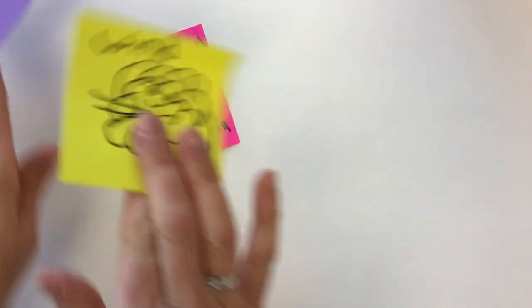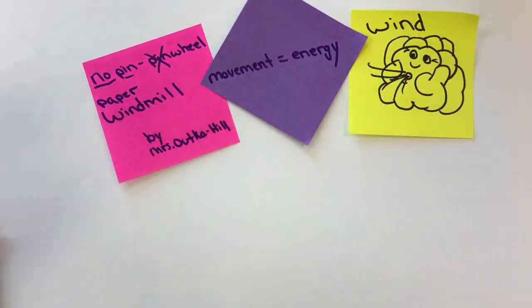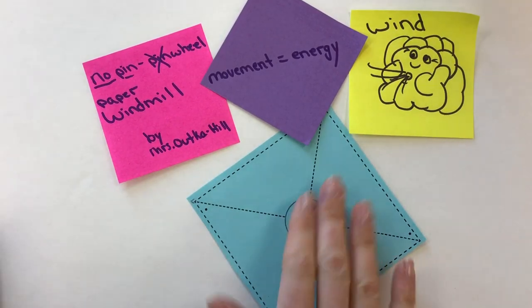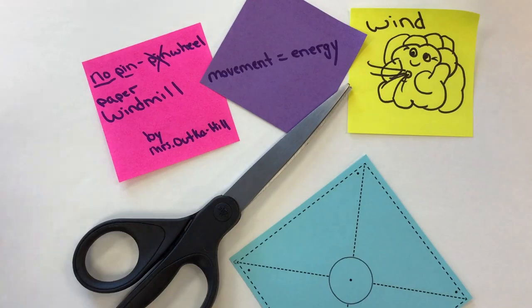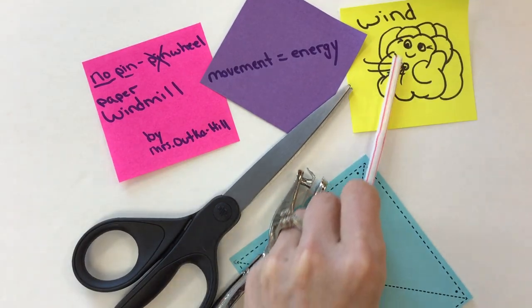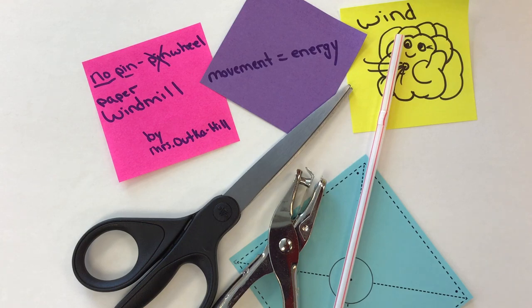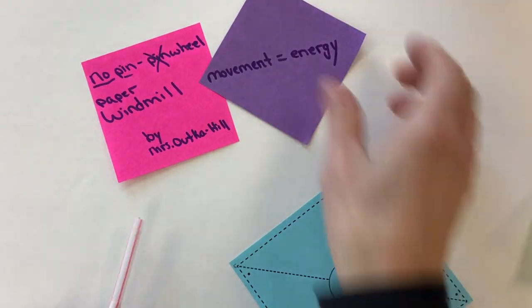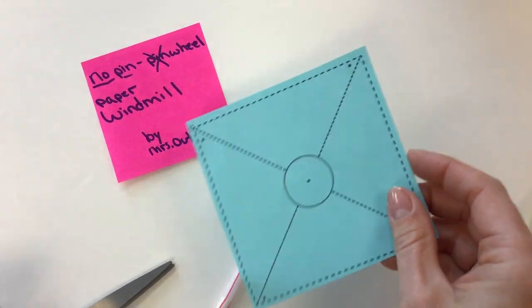The things that you're going to need is a template, some scissors, a hole punch, and a bendy straw. And that's all you're going to need to make this happen. So let's clear our board a little bit and start with our template.